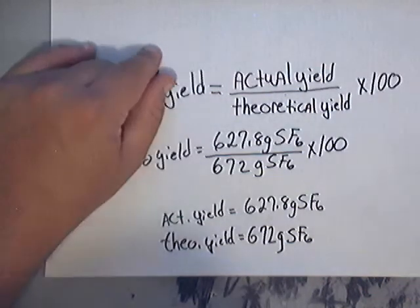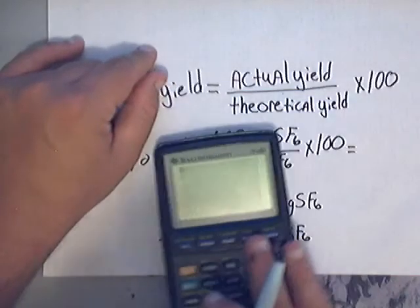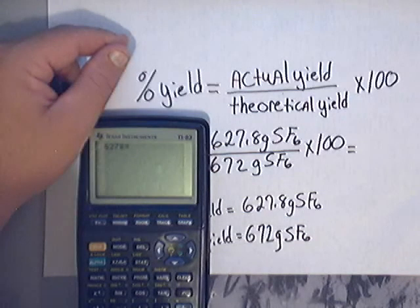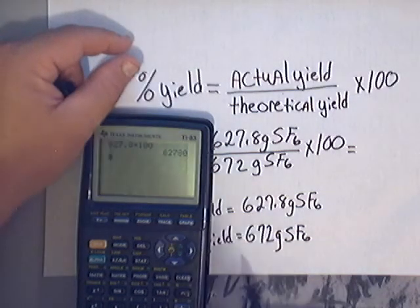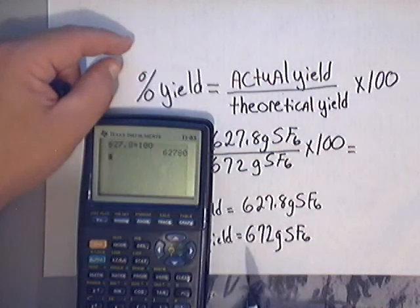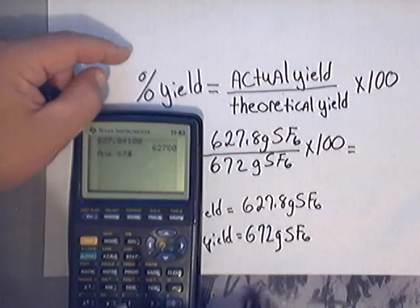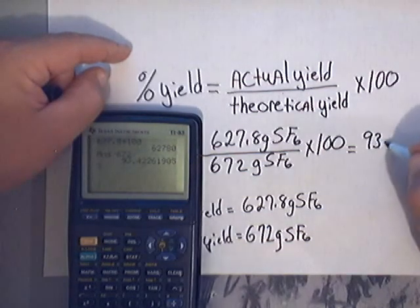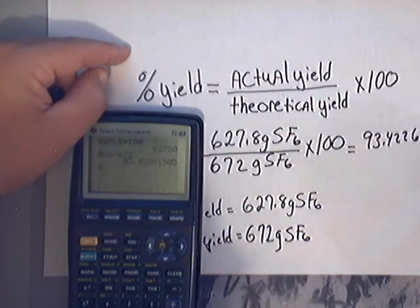You would just punch that into your calculator. That gives you 627.8 times 100, which equals 62,780. Then you divide that by 672, and you end up getting 93.42261905.